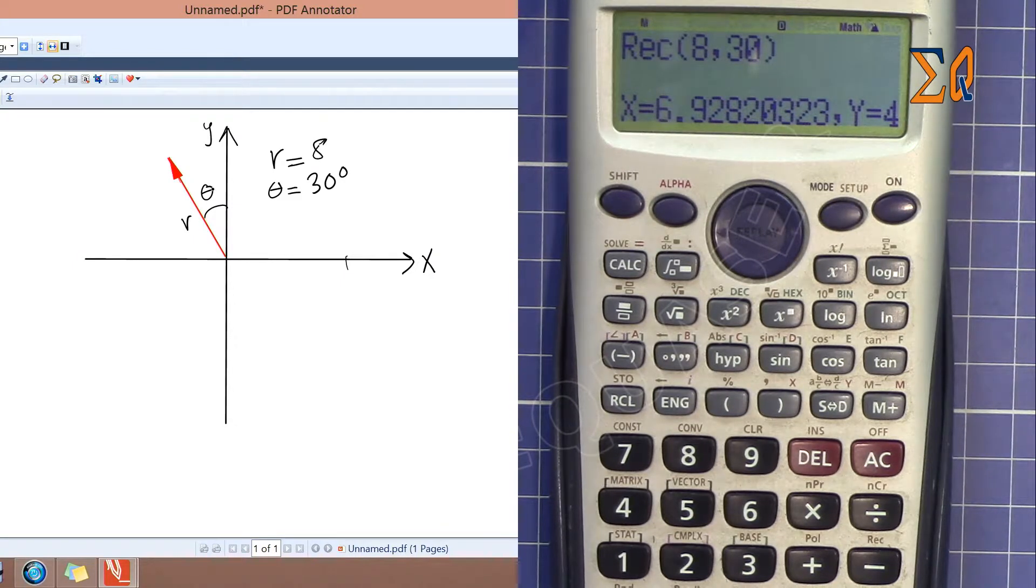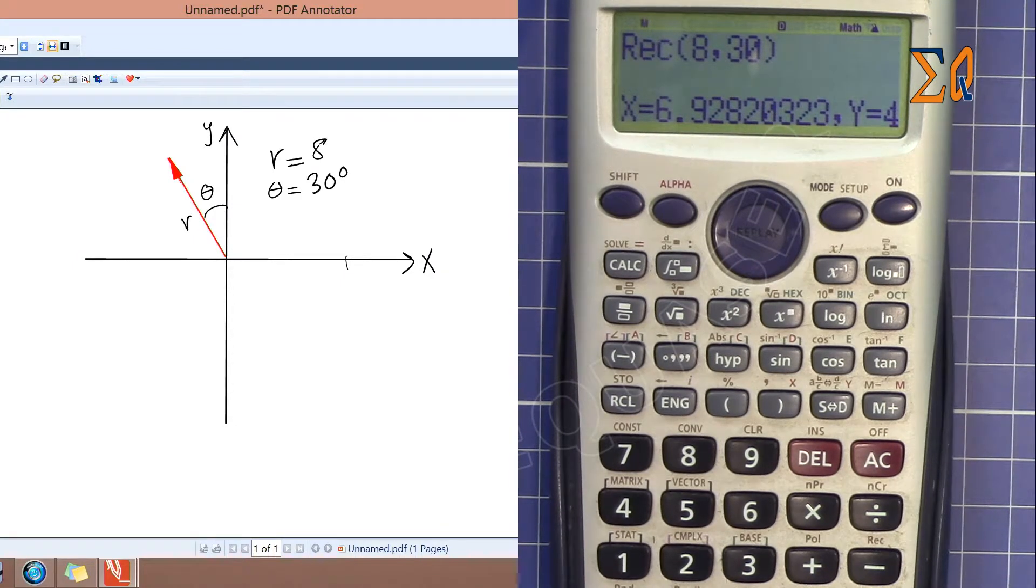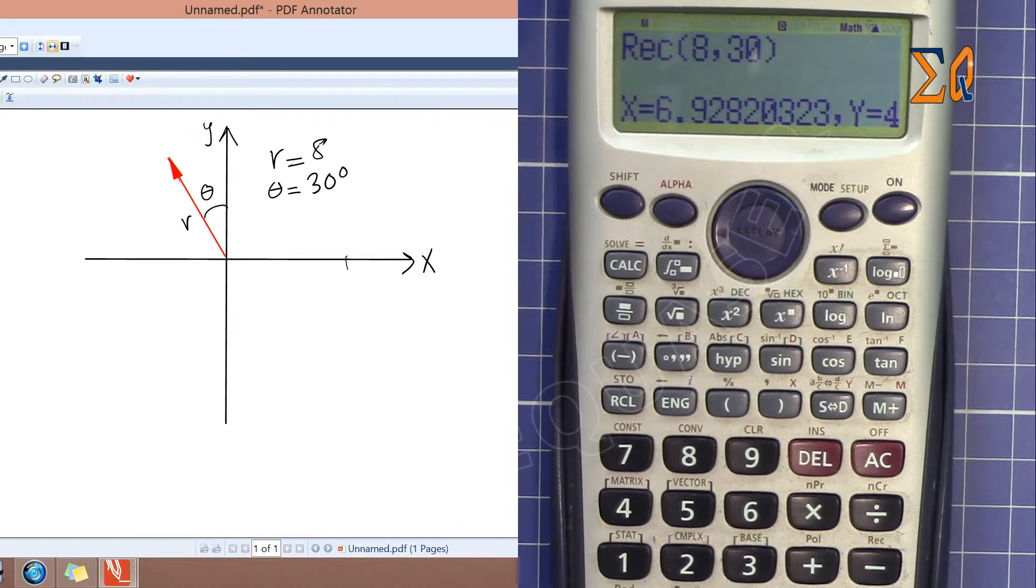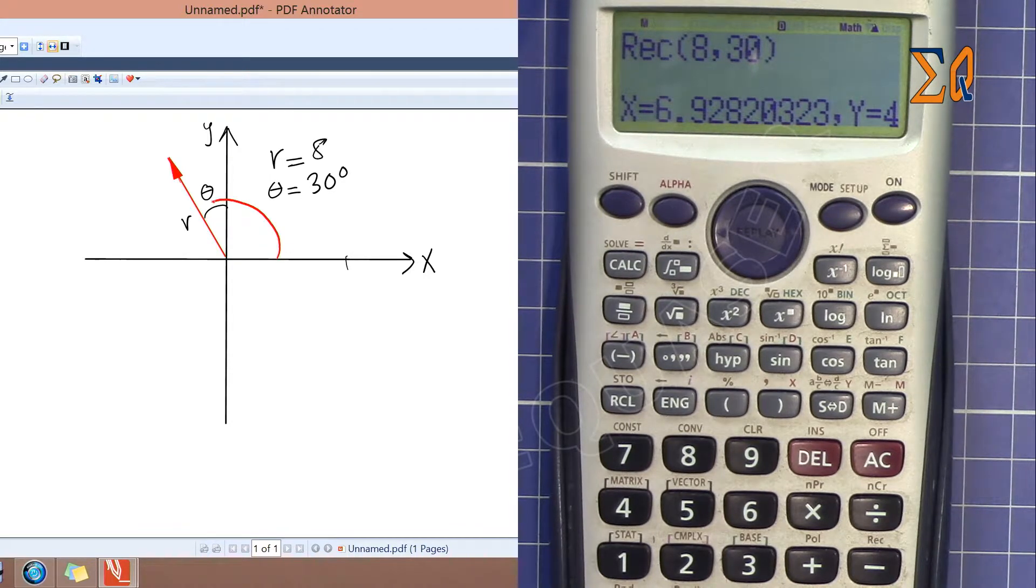So the reason for that one is this angle is not 30 degrees, but this angle is actually 90 plus 30 degrees. So when you enter 30 degrees the calculator thinks it's somewhere here. So actual theta is 90 plus 30 which is 120 degrees.